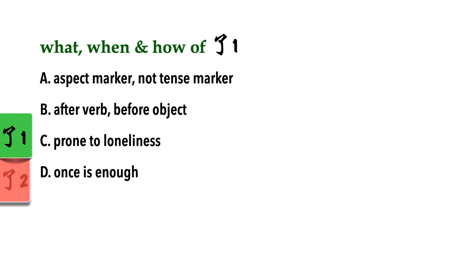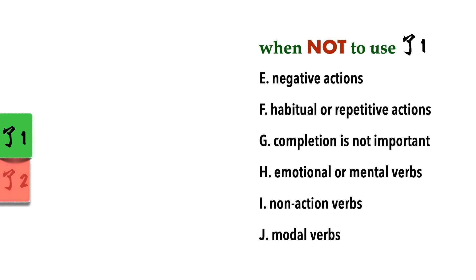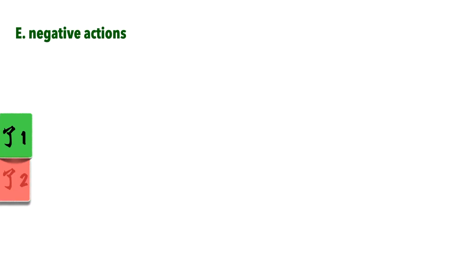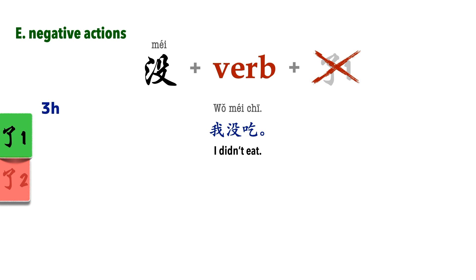We've looked at cases where we use 勒1. Now let's move on to look at cases where we usually don't use it. Negative actions. In negative sentences, 没 is added before the verb, and 勒1 has to be dropped. 我没去. 我没做馒头. Do note that 不 is not used to negate 勒1.